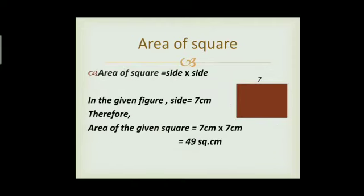Area of square. A square has all sides equal. Its area is side multiplied by side. In the given figure, side equals 7 centimeter. Therefore, area of the square equals 7 centimeter multiplied by 7 centimeter, which is 49. Seven sevens are 49 square centimeter.